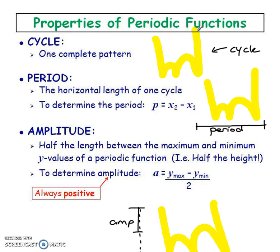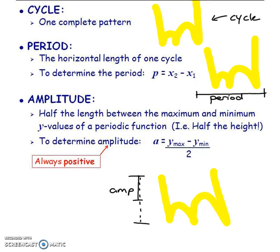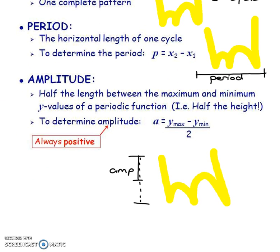The period of that cycle is the horizontal length, so you can always take the x value here, which is x2, and subtract the x value here, which is x1, and you'll get the period. The amplitude is half the length between the max and the min. If you have your max and your min, you subtract them and divide by 2. So that gives you the amplitude, which is just from either the max to the middle or from the min to the middle. It's always going to be positive.